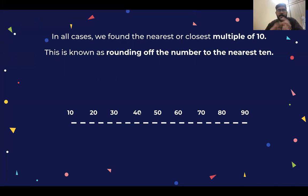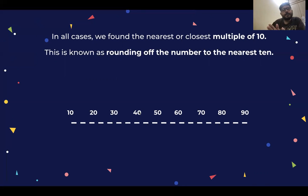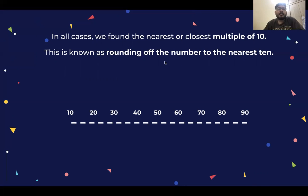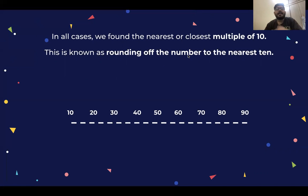In all cases, based on the position where Leela was, we found the nearest multiple of 10 — which was the location of the petrol pump. This is the closest and nearest multiple. This is what we call rounding off the number to the nearest ten.